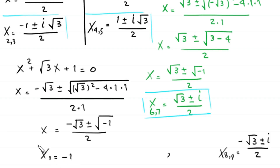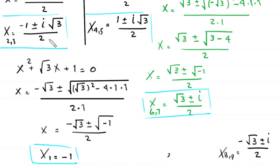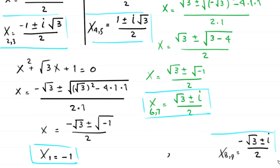So we have nine solutions for this equation. The first is x equals negative 1. The second and third are x equals negative 1 plus or minus i times root 3, over 2. The fourth and fifth are x equals 1 plus or minus i times root 3, over 2. The sixth and seventh are x equals root 3 plus or minus i, over 2. The eighth and ninth are x equals negative root 3 plus or minus i, over 2.